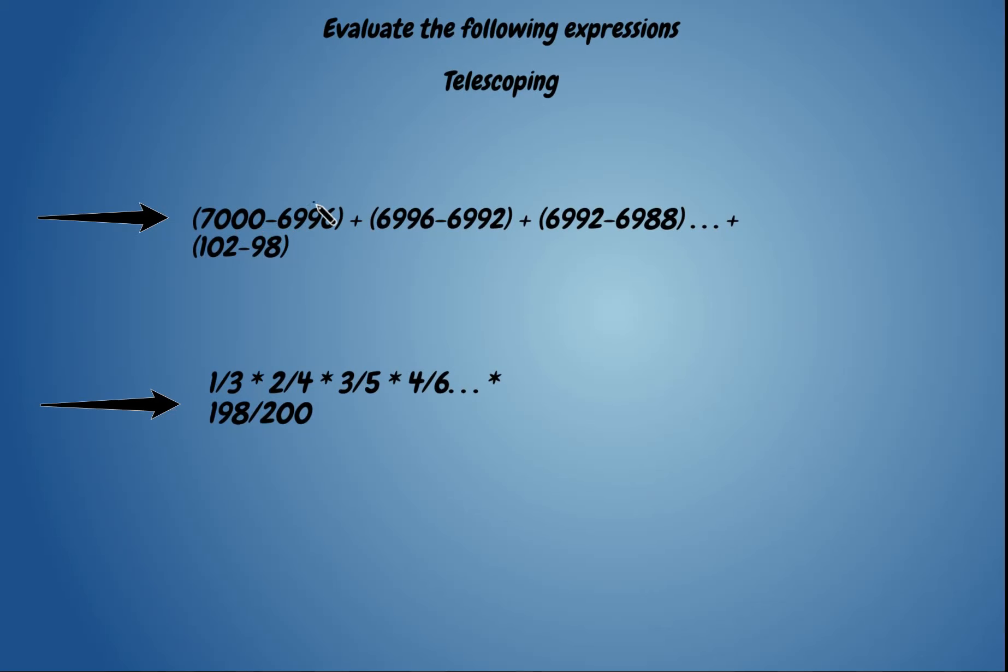7000 minus 6996 plus 6996 minus 6992 plus 6992 minus 6988 and so on. This symbol means so on until blah blah blah. If there's no blah blah blah after this and so on, then that means it's forever. But anyways, back to topic. We have to evaluate this.